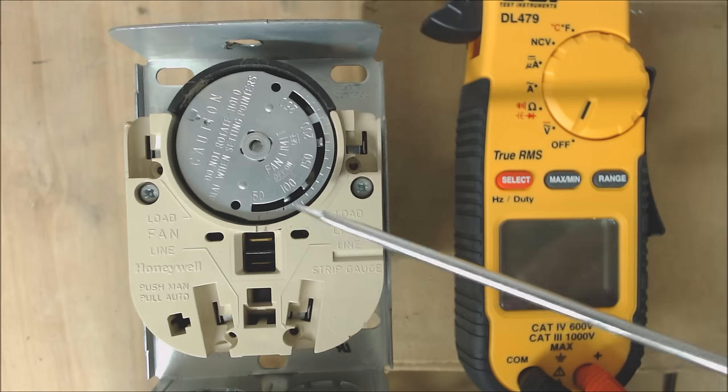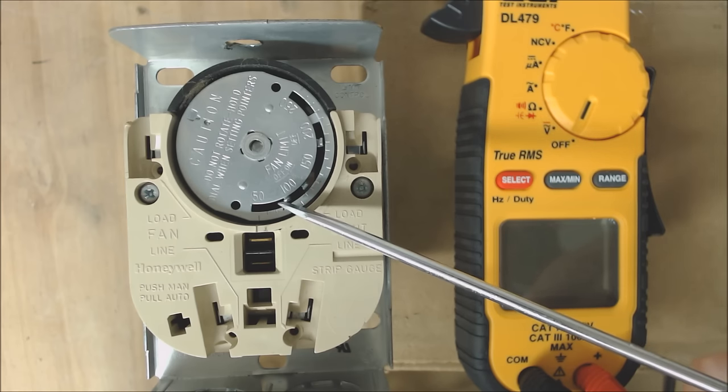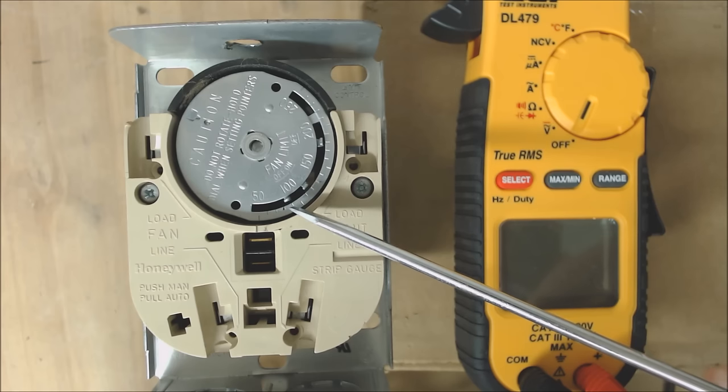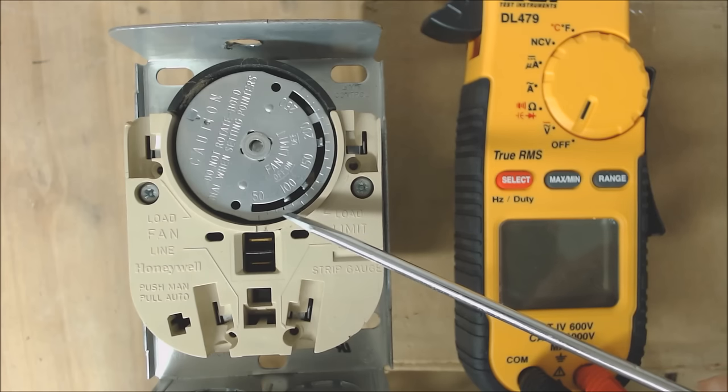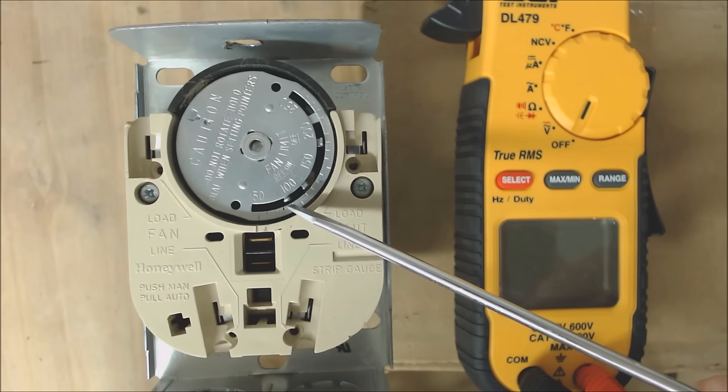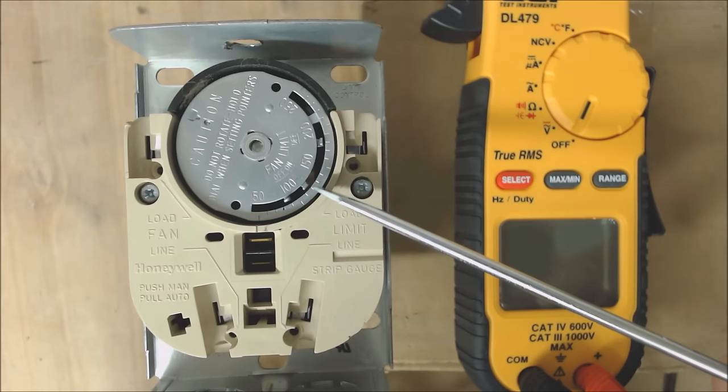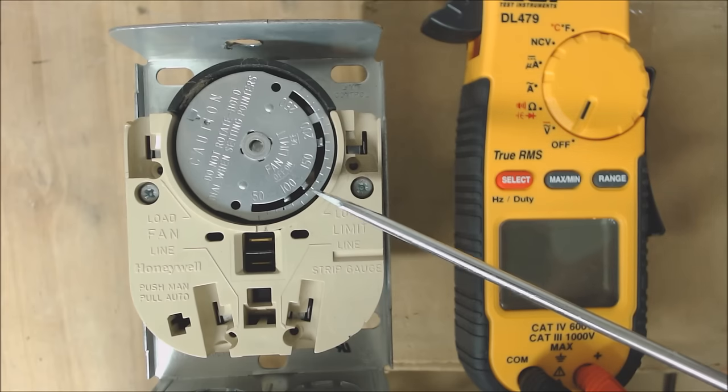If you look at these three dials right here, the first one is when the blower motor turns off, and we typically set that anywhere from around 85 to 90 degrees. This second one is when the blower motor turns on, and that one we typically set at 120 degrees.